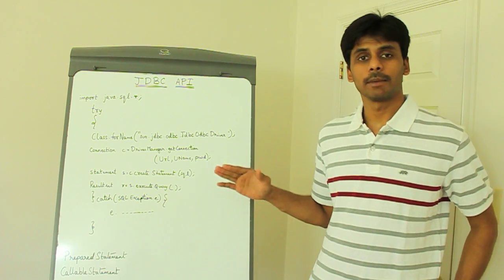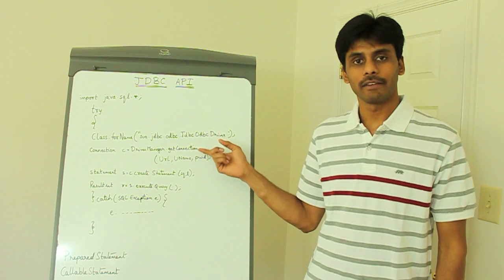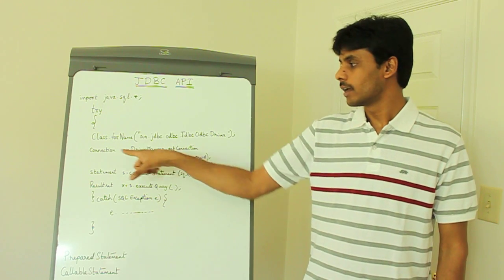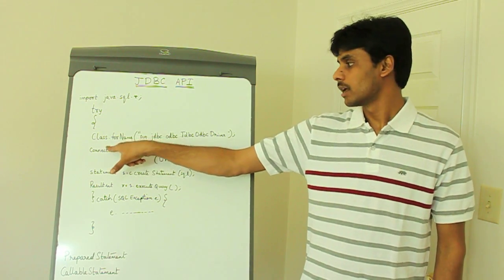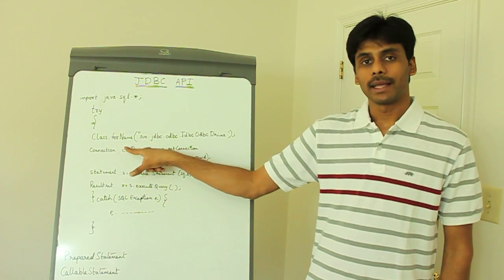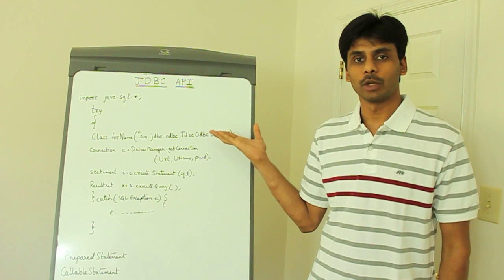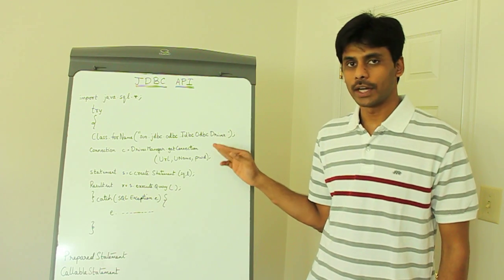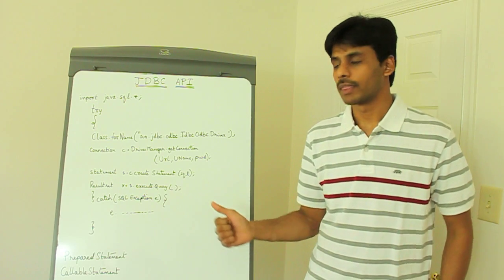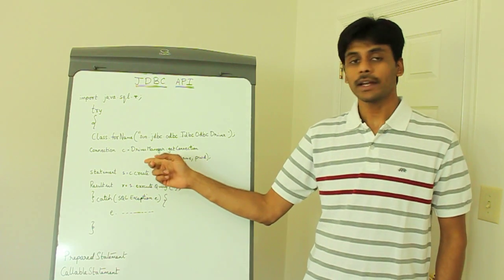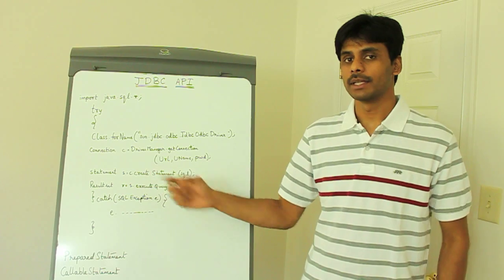The first statement in your JDBC code will be loading the driver into memory using the Class.forName() method. On the Class, we invoke the static method called forName and pass in the driver name, which loads it into memory. When a driver is loaded into memory, it automatically registers itself with the DriverManager class, which is an important class in the JDBC API.